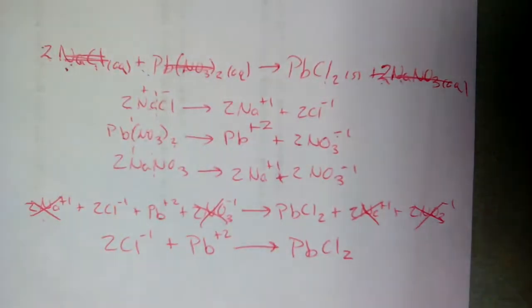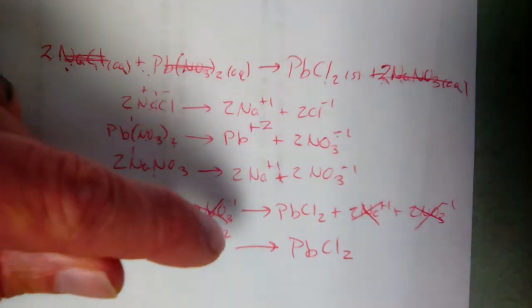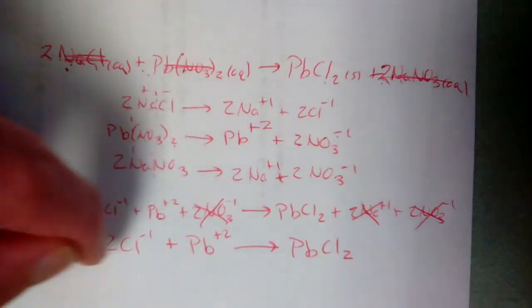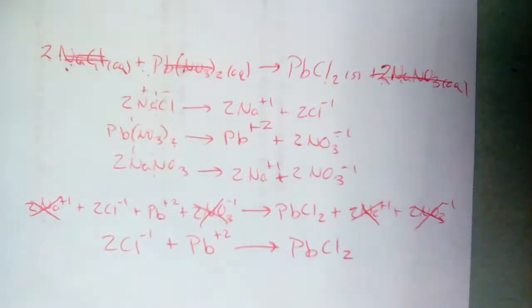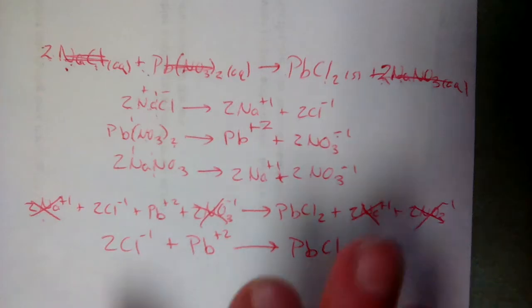Rewrite the equation with what's left: 2 Cl⁻ and Pb²⁺ on the reactant side, PbCl2 on the product side. We've distilled the entire chemical equation down to what's really happening: chloride ions and lead ions are coming together to make lead(II) chloride. That is the net ionic equation.